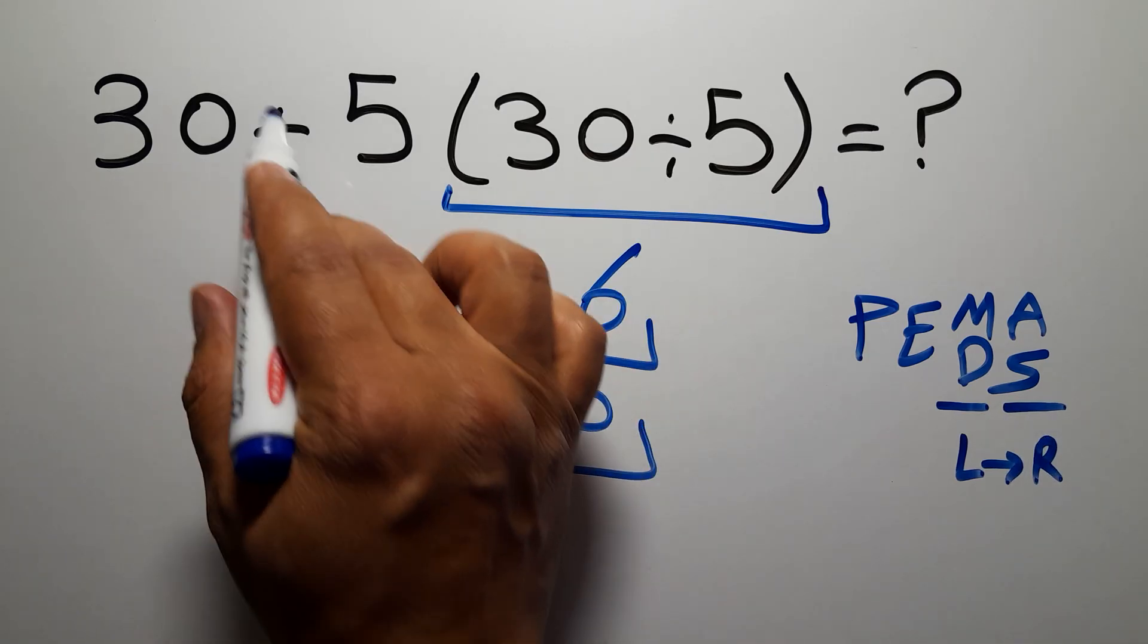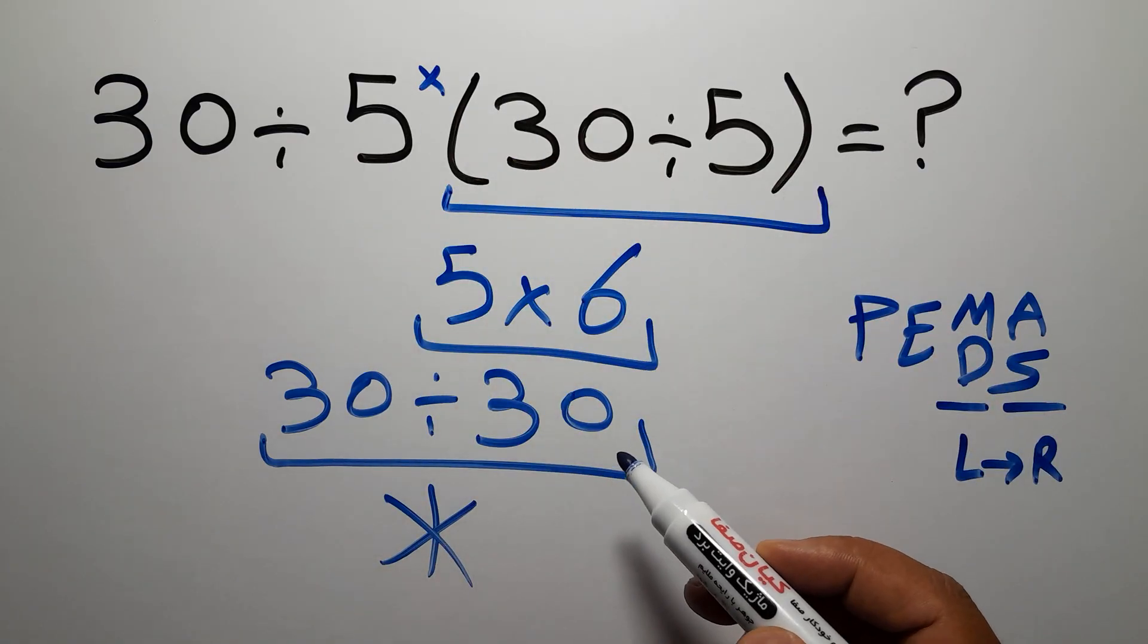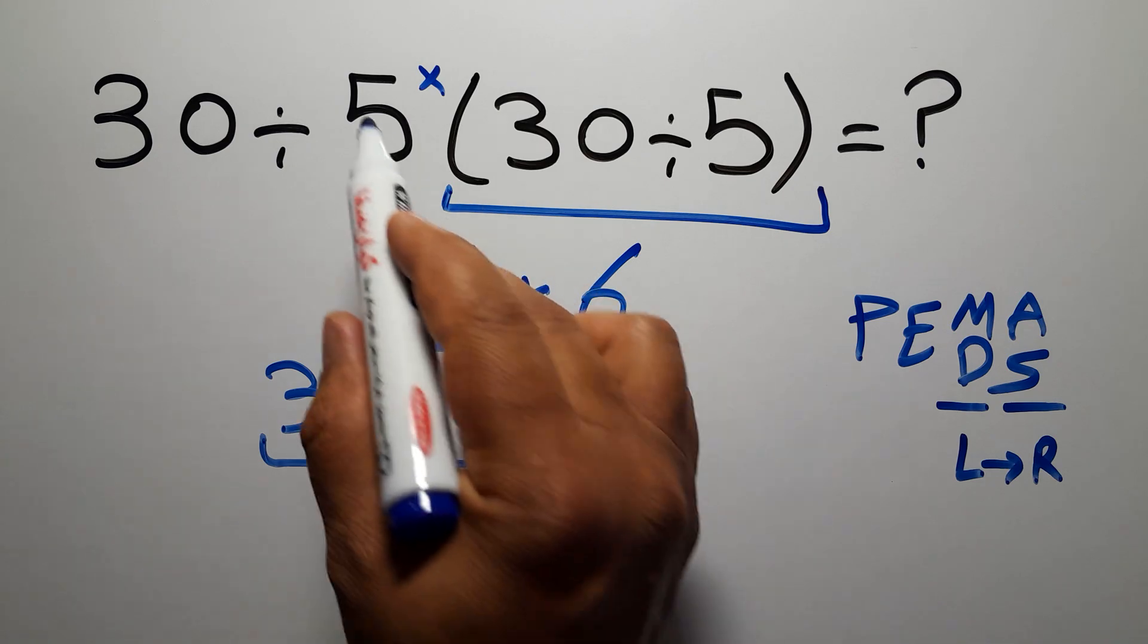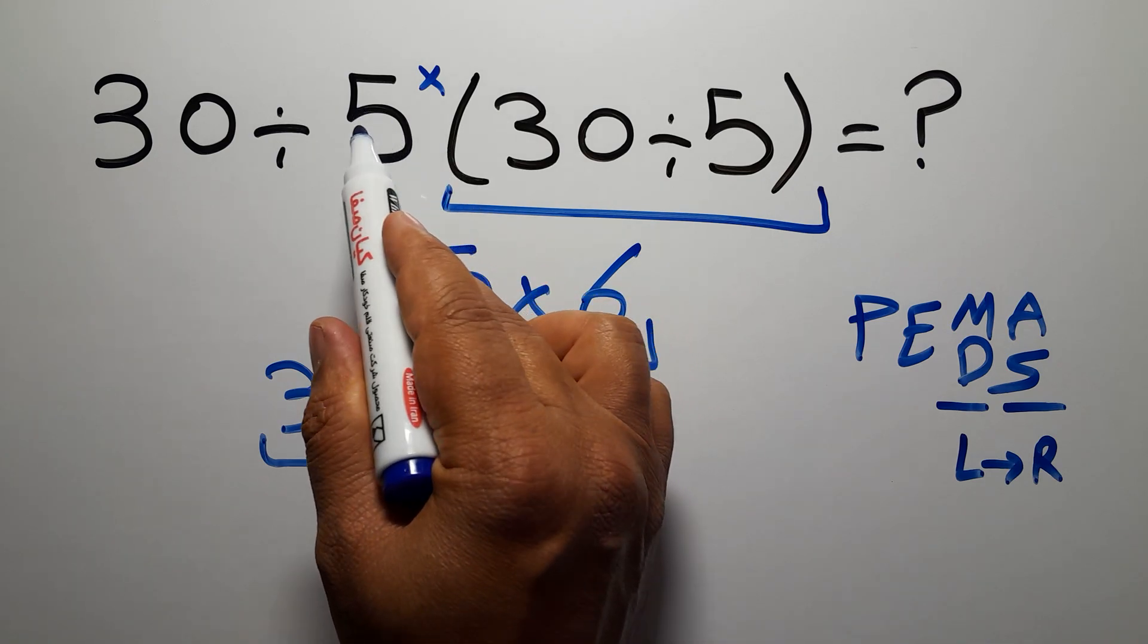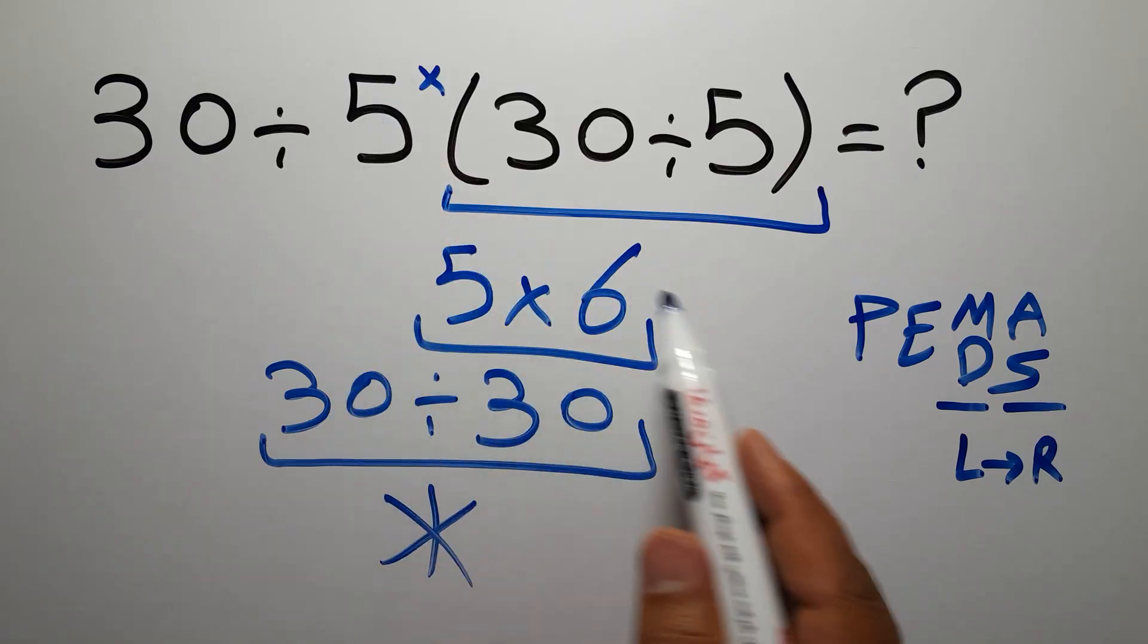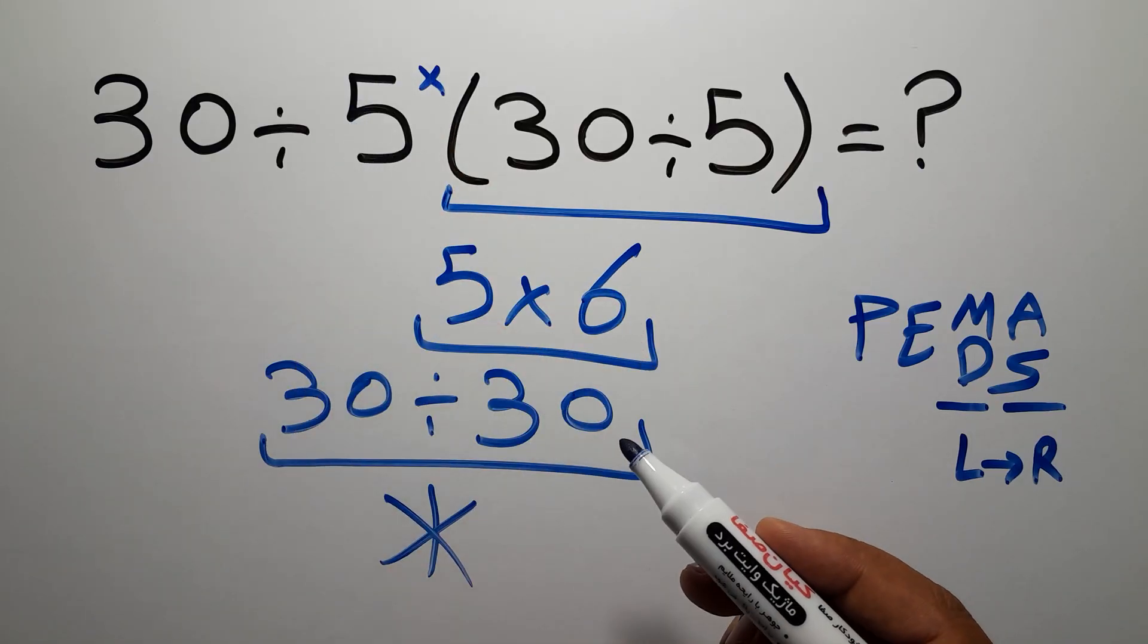Here in this expression we have one division, one multiplication, and one parentheses. We have a multiplication because in mathematics when a number is placed next to parentheses it means multiplication, and we usually don't write the multiplication sign for brevity.